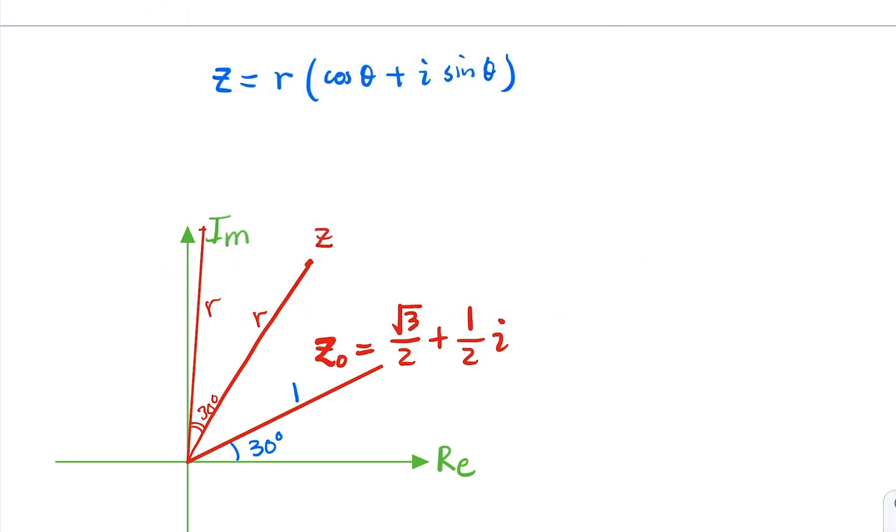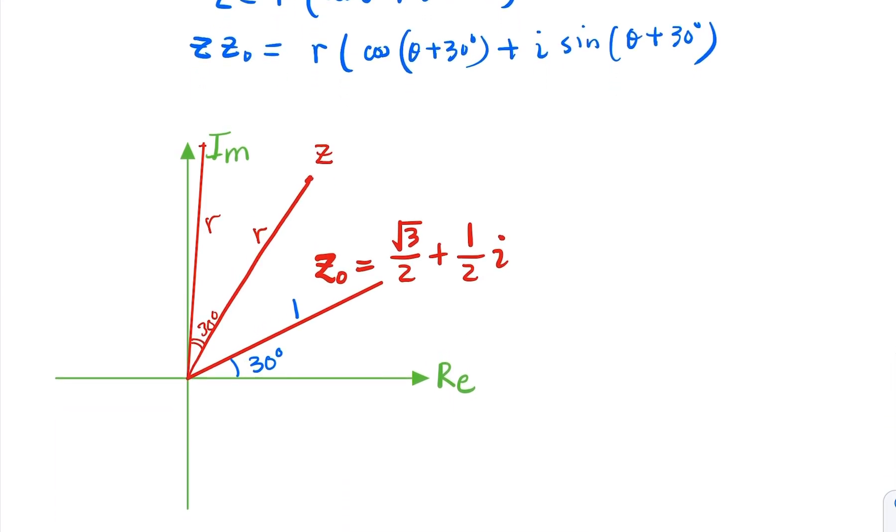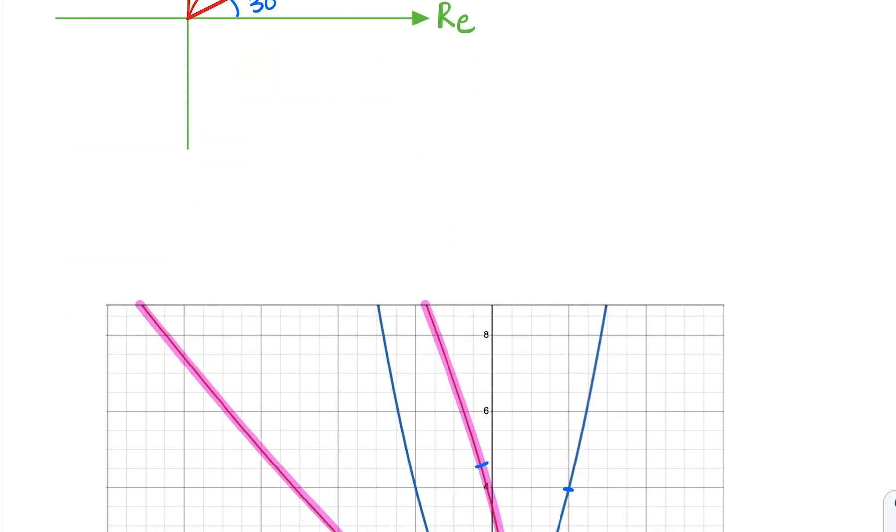The multiplication of complex number z would equal the same modulus and theta would be theta plus 30 degrees. So with that review of complex number of multiplication, we can go back to the original problem.